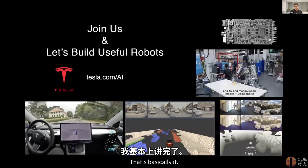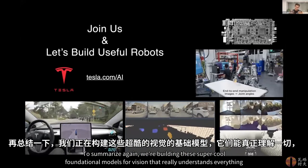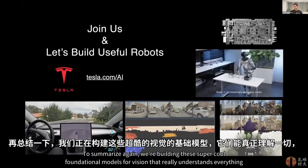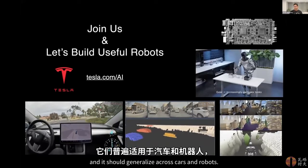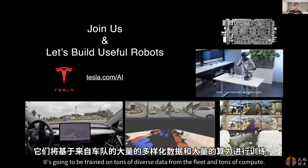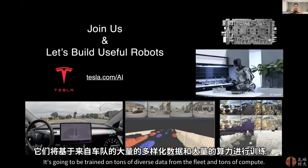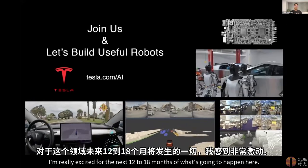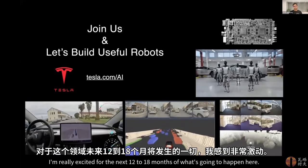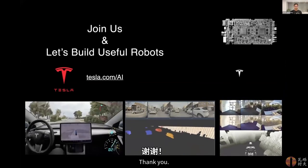That's basically it. To summarize: we're building super cool foundational models for vision that really understand everything. It should generalize across cars and robots. It's going to be trained on tons of diverse data from the fleet and on tons of compute. I'm really excited for the next 12 to 18 months of what's going to happen here. Thank you.